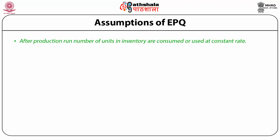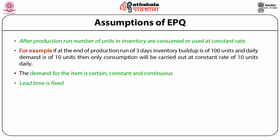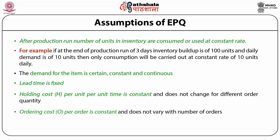After the production run, the number of units in inventory are consumed at a constant rate. For example, if at the end of a production run of 3 days inventory buildup is 100 units and daily demand is 10 units, then only consumption is carried out at a constant rate of 10 units daily. The demand is certain, constant and continuous. Lead time is fixed. Holding cost H per unit time is constant, and ordering cost S per order is constant and does not vary with the number of orders.